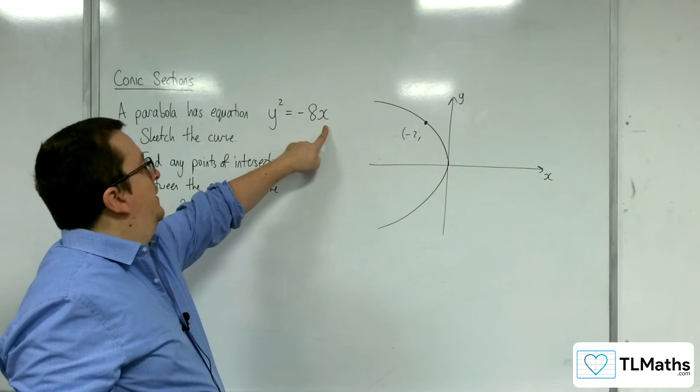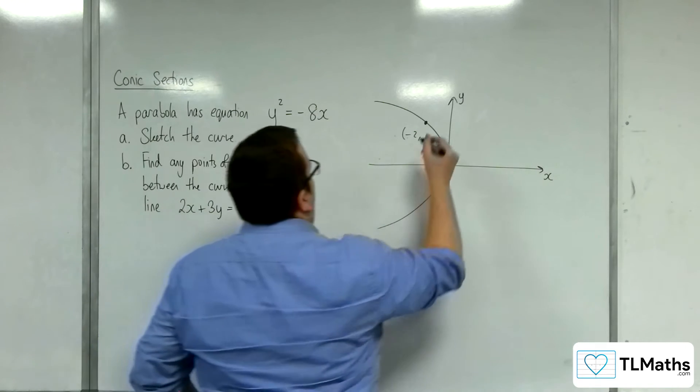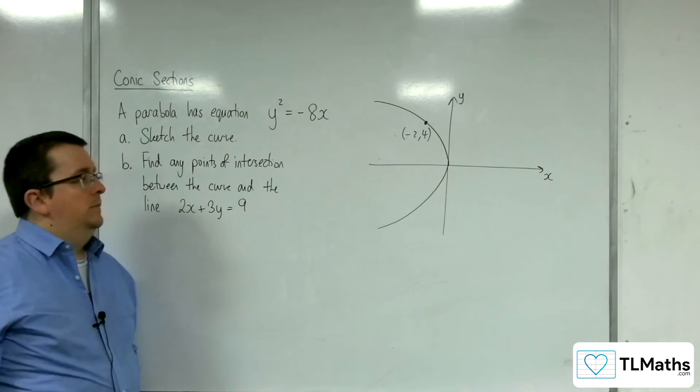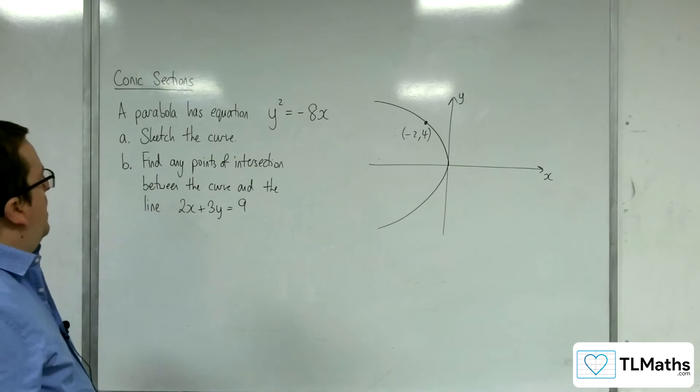Minus 8 times minus 2 is 16. So y would be 4. So minus 2, 4 is a point on the curve. So that's perfectly fine.